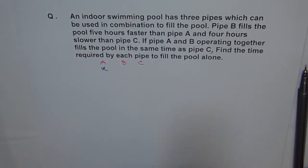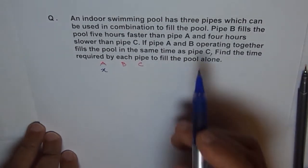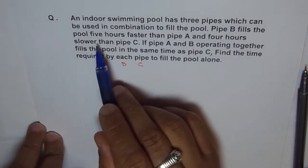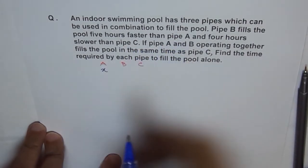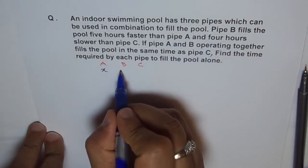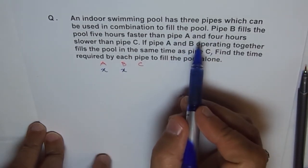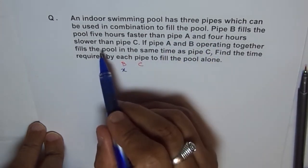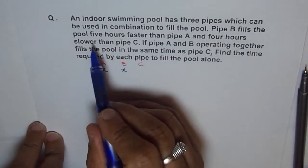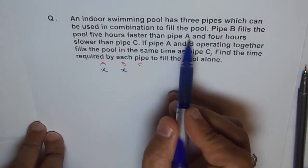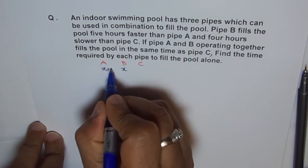There are three pipes and they have their own speed of filling the pool. Pipe B fills the pool five hours faster than pipe A. So let's say pipe B fills the pool in X hours. Then pipe A takes five hours more, so pipe A should take X plus five hours.